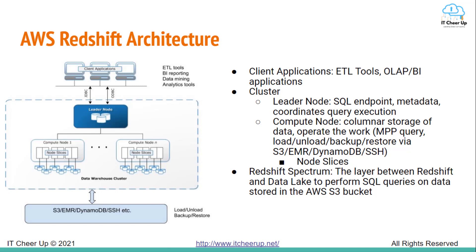AWS Redshift is a fully managed data warehouse solution based on PostgreSQL but beyond just PostgreSQL. The core infrastructure component of AWS Redshift data warehouse is a cluster. A cluster is composed of one or more compute nodes. The client application interacts directly only with the lead node. Inside each compute node, it is partitioned into slices. Redshift reduces I/O through columnar storage, data compression, and massively parallel processing (MPP). AWS Redshift also introduced Redshift Spectrum that directly performs SQL queries on data stored in the AWS S3 bucket. This can save time and money without moving data from the storage servers to the data warehouse.